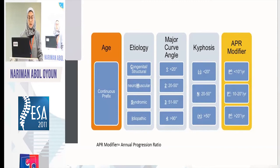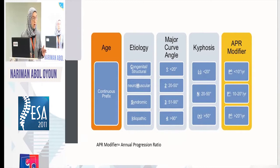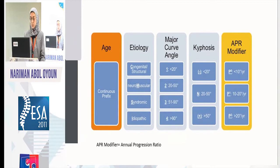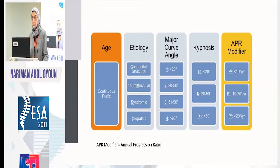If the patient has a congenital or structural anomaly of the spine, chest cage, or body in general — like hemihypertrophy — it fits in the first category. If the patient is neuromuscular, syndromic, or idiopathic, you allot it to its specific area. Major curve angles are stratified according to severity. Kyphosis is divided into three categories: negative or normal (20 to 50 degrees), or plus (more than 50). And then there's the APR modifier.